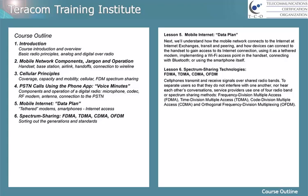Lesson six is spectrum sharing technologies: FDMA, TDMA, CDMA, and OFDM. Cell phones transmit and receive signals over shared radio bands. To separate users so that they do not interfere with one another nor hear each other's conversations, service providers use one of four radio band or spectrum sharing methods: frequency division multiple access, time division multiple access, code division multiple access, and orthogonal frequency division multiplexing, OFDM.